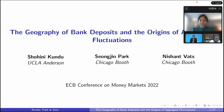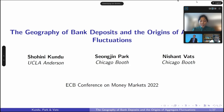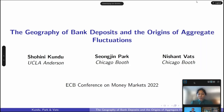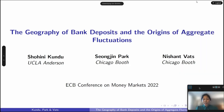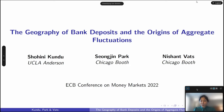I'd like to start by thanking the organizers for giving me the opportunity to present this work today. The title of this paper is 'The Geography of Bank Deposits and the Origins of Aggregate Fluctuation.' This is joint work with Sangin Park and Ashant Vats, who are two excellent PhD candidates from the University of Chicago, and both of them are on the market this year, so please keep an eye out for them.